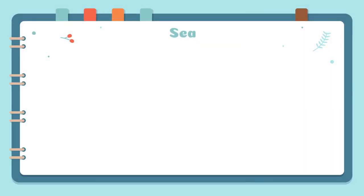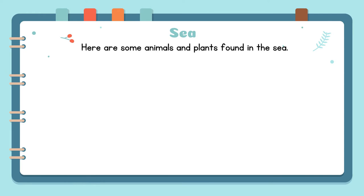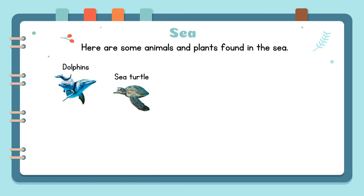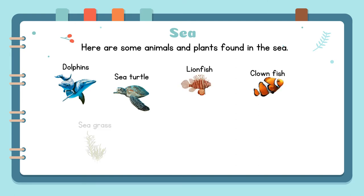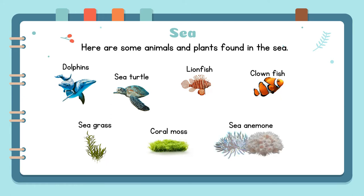Sea. Here are some animals and plants found in the sea: Dolphins, Sea Turtle, Lionfish, Clownfish, Seagrass, Coral, and Sea Anemone.